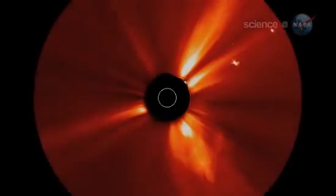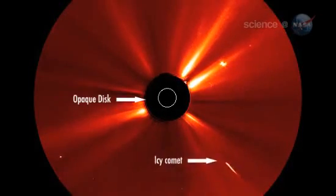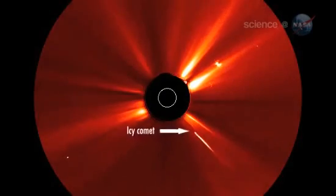And now, the solar system has one less dirty snowball. The Solar and Heliospheric Observatory saw it first, using an opaque disk to block the sun's glare. SOHO recorded the early stages of the comet's death.